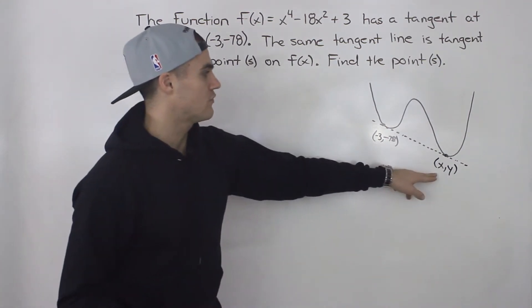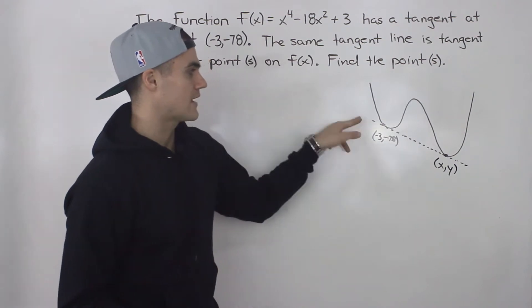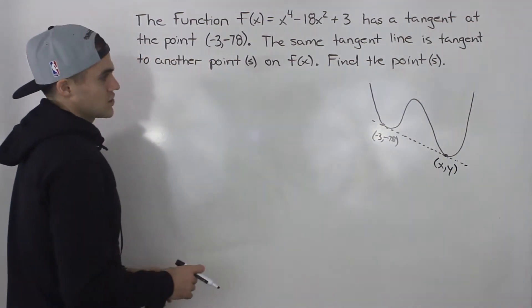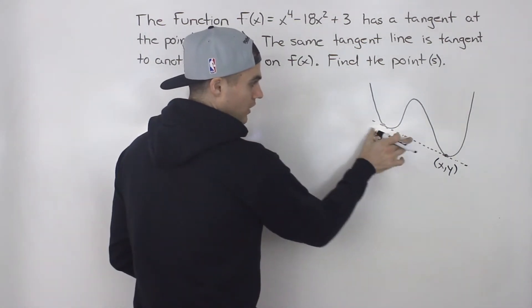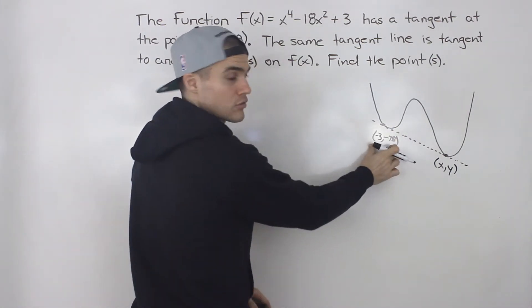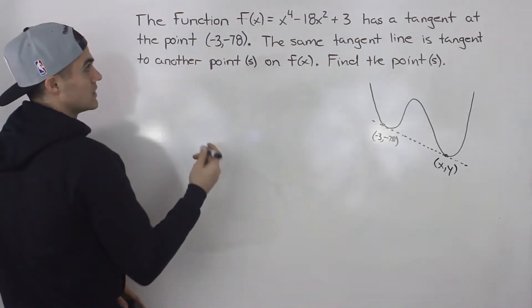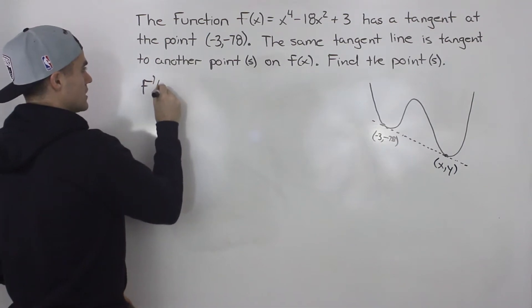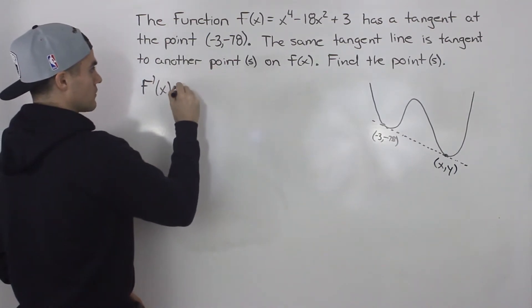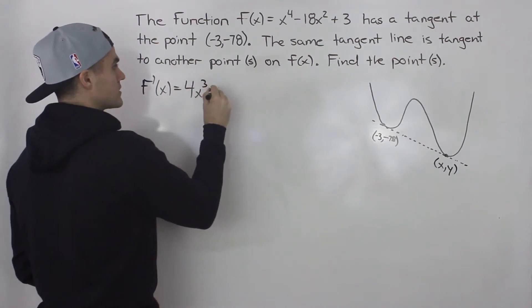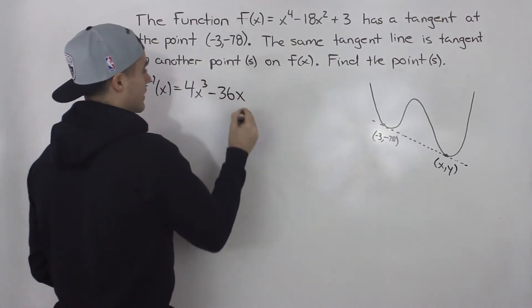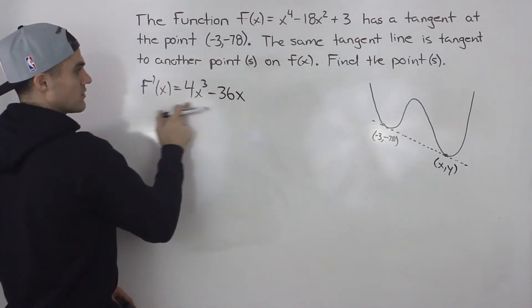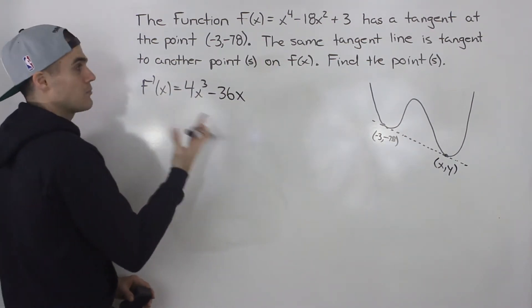So how do we find another point that has that same tangent line? My suggestion is we first find the slope of that tangent line at (-3, -78). We can do that by finding the derivative of the function. Applying the power rule, we end up with 4x³ - 36x. This derivative gives us the slope of the tangent at any point.